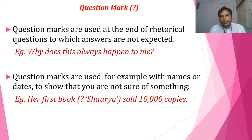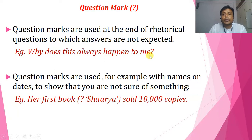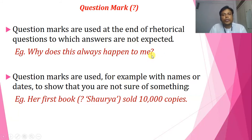Moving further — question marks are used at the end of rhetorical questions, to which answers are not expected. Sometimes in our speech we use rhetorical questions. For example: 'Why does this always happen to me?' — the answer to this question is not expected. Whenever answers are not expected, we still use a question mark.